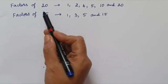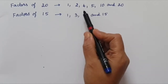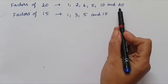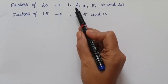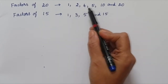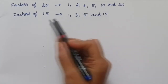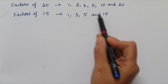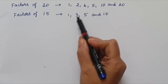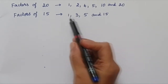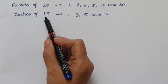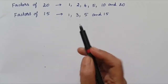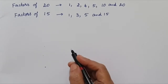The factors of 20 are 1, 2, 4, 5, 10 and 20. That is, 1 multiplied by 20 is 20, 2 multiplied by 10 is 20, and 4 multiplied by 5 is 20. In the same way, factors of 15 are 1, 3, 5 and 15. That is, 1 times 15 is 15, and 3 multiplied by 5 is also 15. No other number we multiply will give us 15. That is why these numbers are factors of 20 and factors of 15.